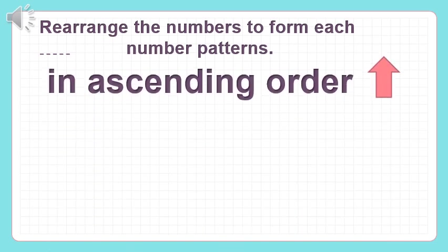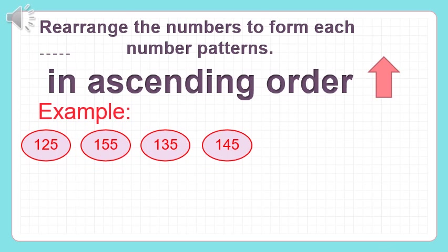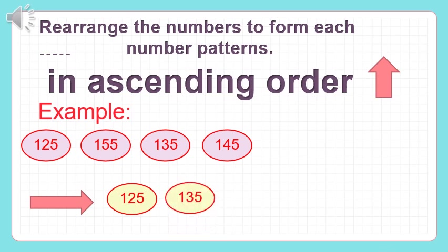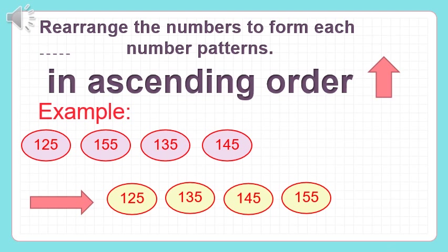Rearrange the numbers to form each number pattern in ascending order, meaning counting up. For example, we have: one hundred twenty-five, one hundred fifty-five, one hundred thirty-five, and one hundred forty-five. Rearranging in ascending order from smallest: one hundred twenty-five, then one hundred thirty-five, next one hundred forty-five, and last is one hundred fifty-five. As you see, each number goes up counting by tens.